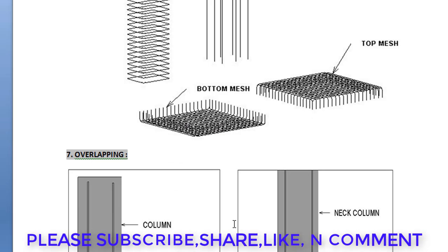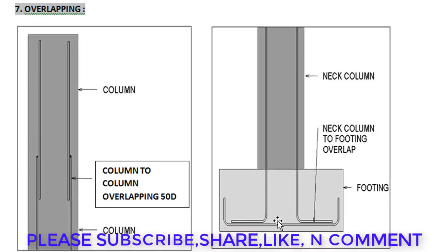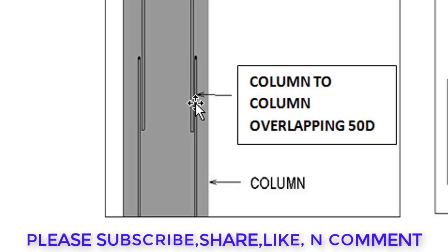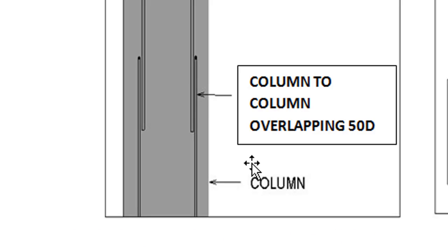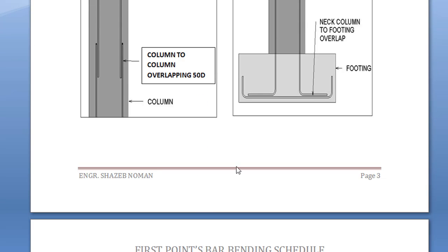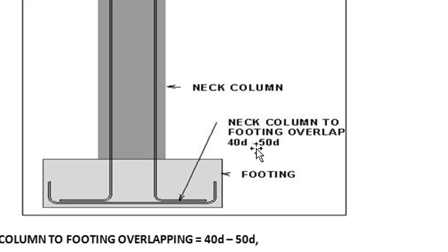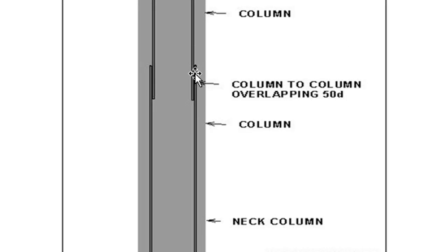During calculations, we need to understand overlapping. Footing to column, column to beam, or beam to slab connections require overlapping. When a 12-meter bar runs out, you must add another bar with some overlapping space rather than joining at the ends. For column to footing overlap, we take 40d to 50d depending on footing thickness. For column to column or beam to beam overlapping, we take 50d.